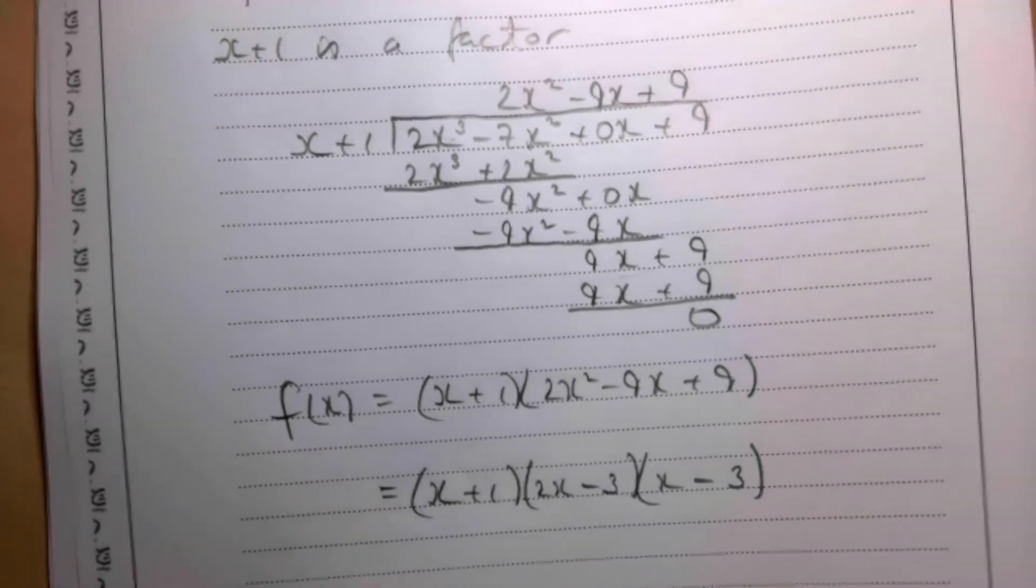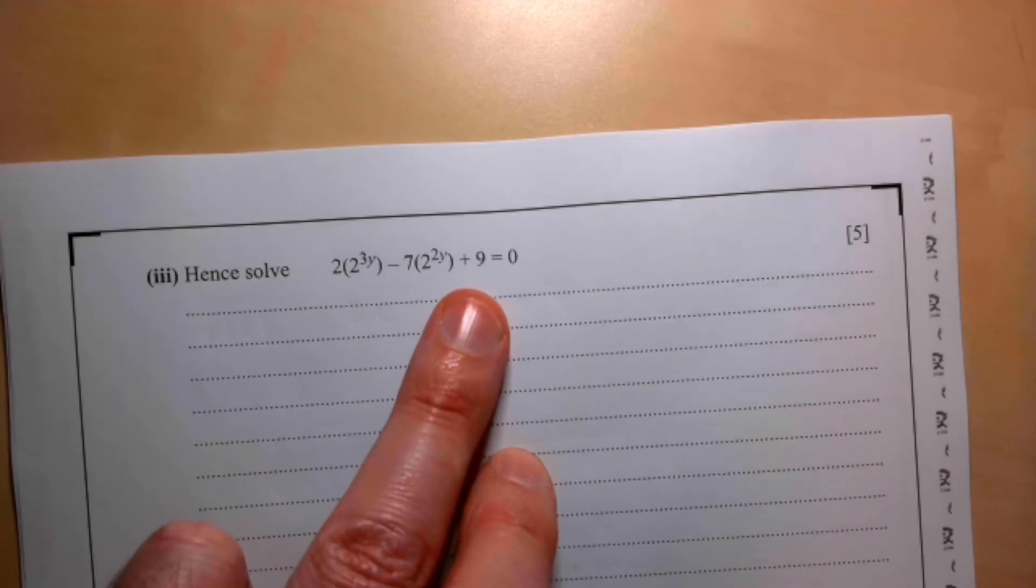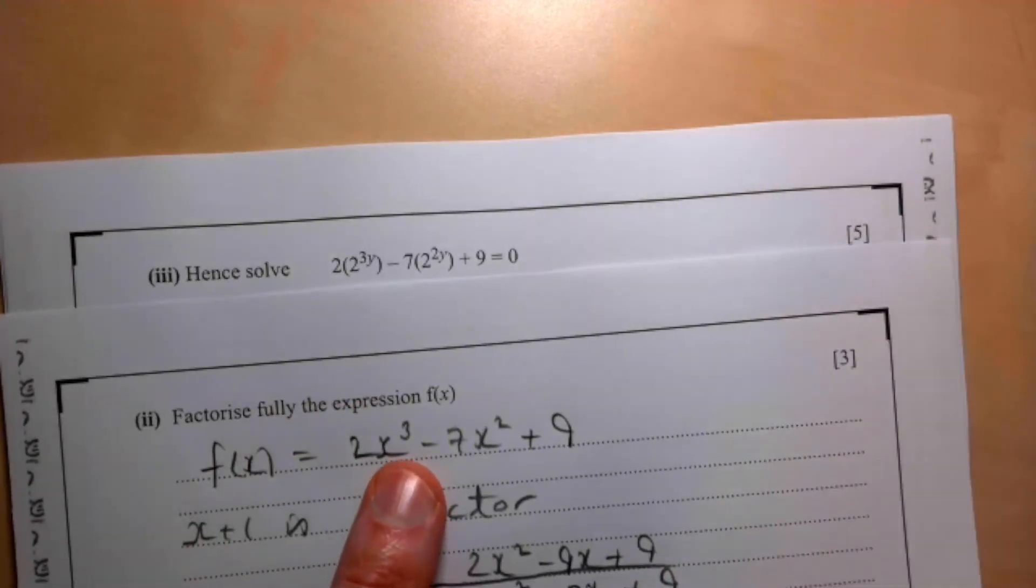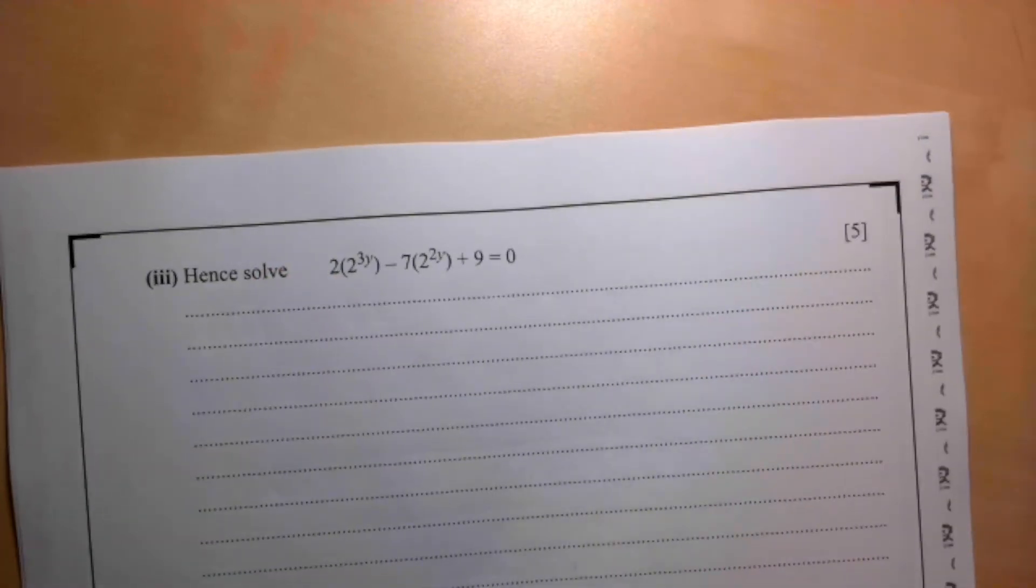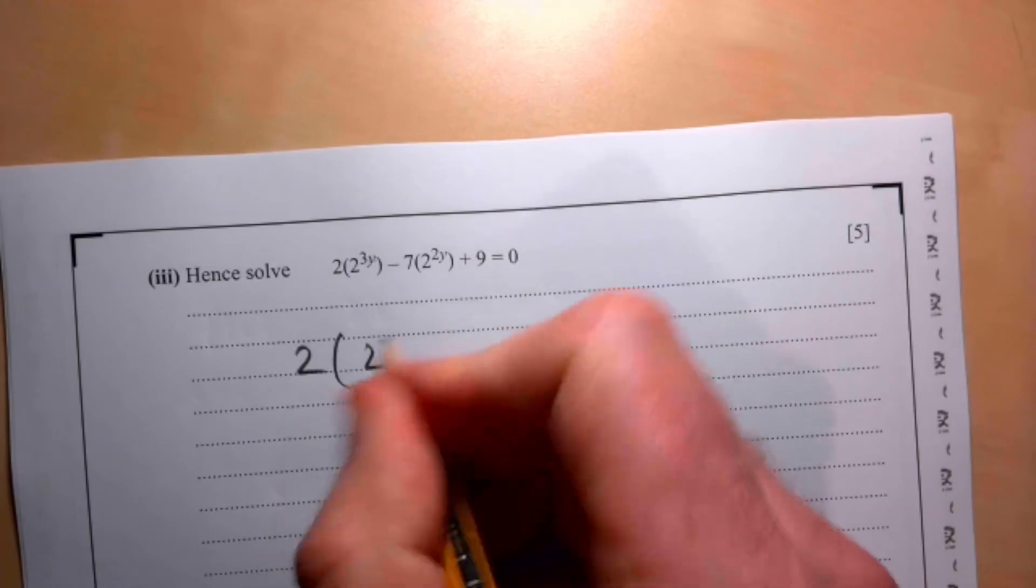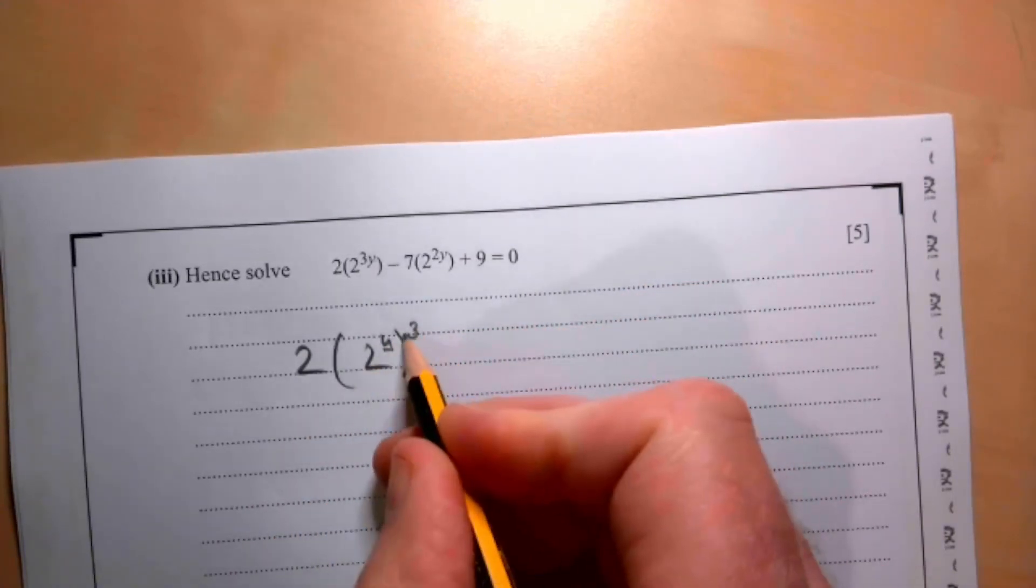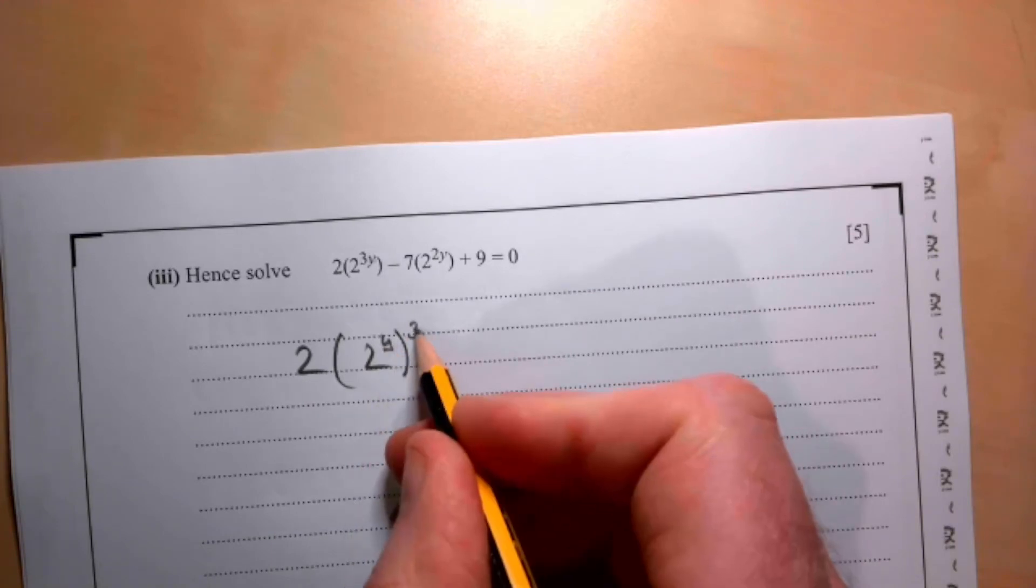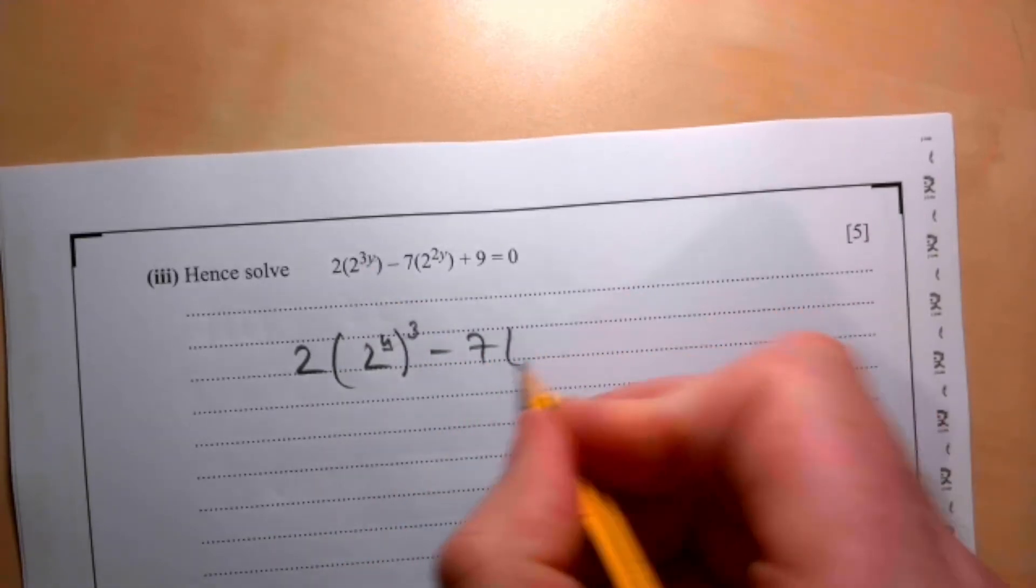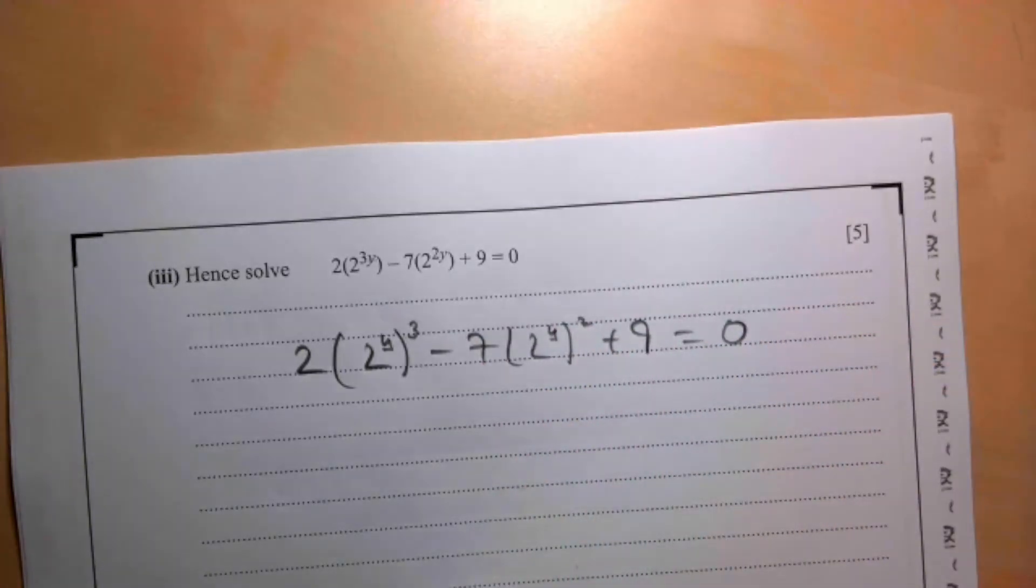And on to part 3. Hence solve this. Hopefully this is related to the previous work. So I'm going to rearrange this. That's 2/(2^(3y)), using my rules of indices. So y times 3 because you multiply those. That gives us 2(2^y)³ - 7(2^y)² + 9 = 0.